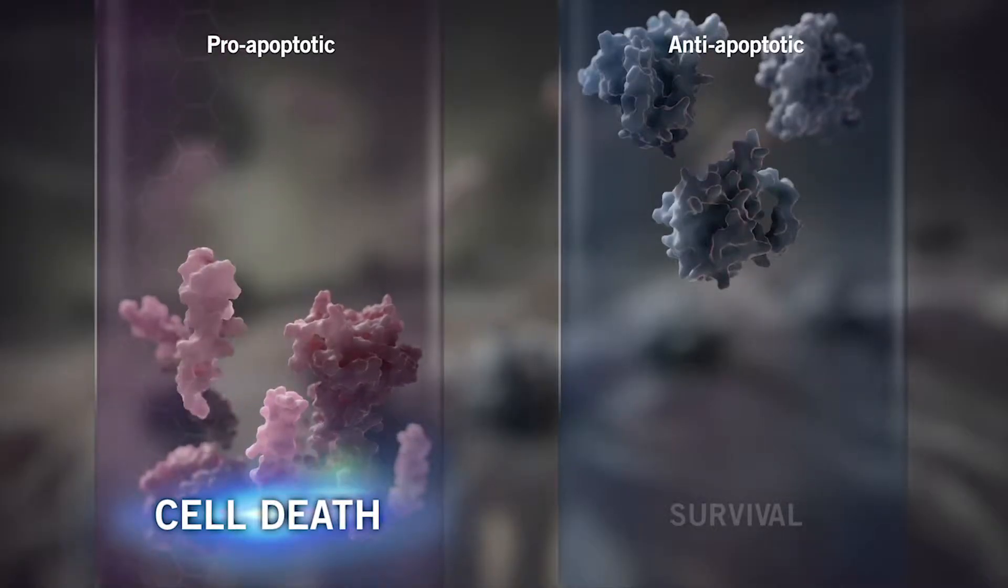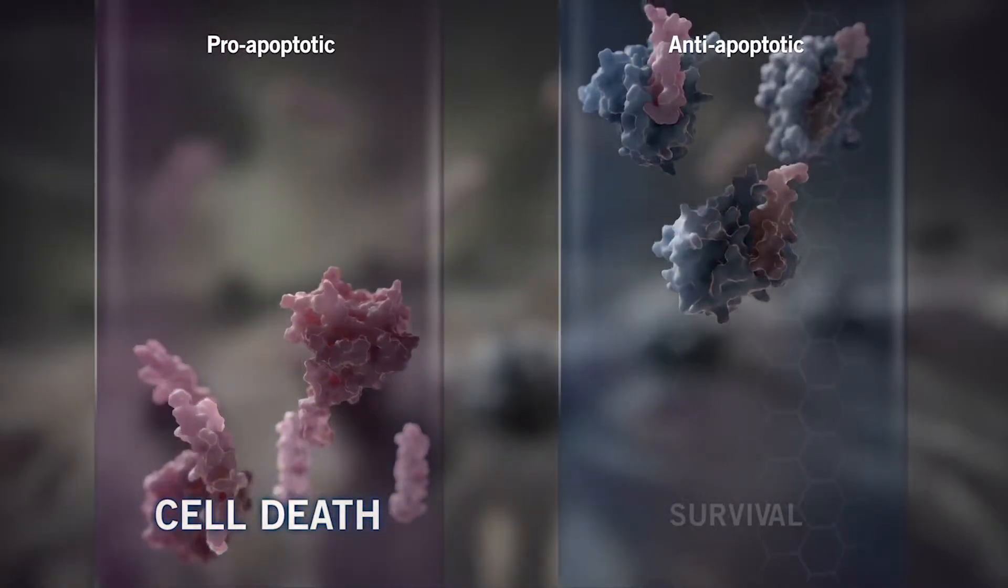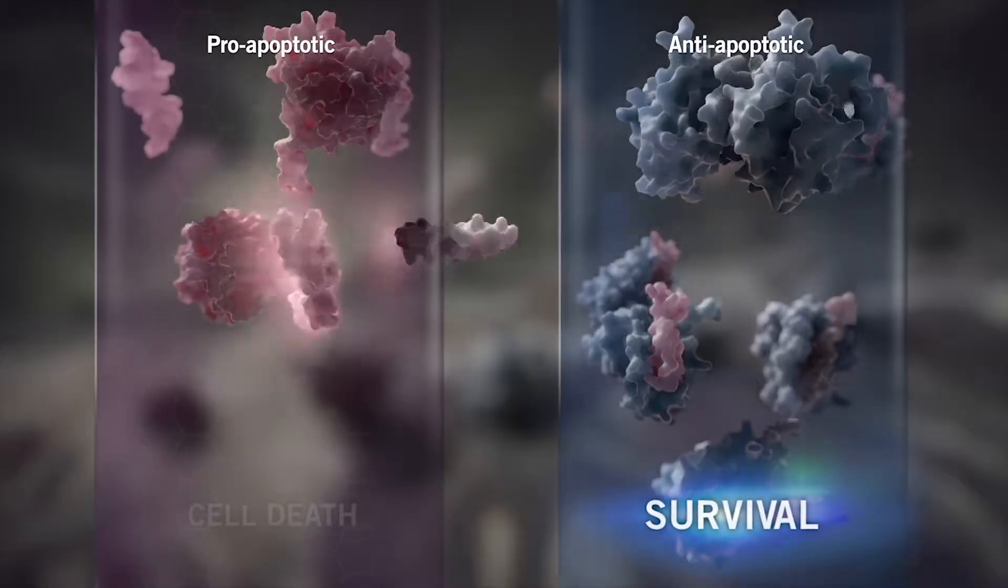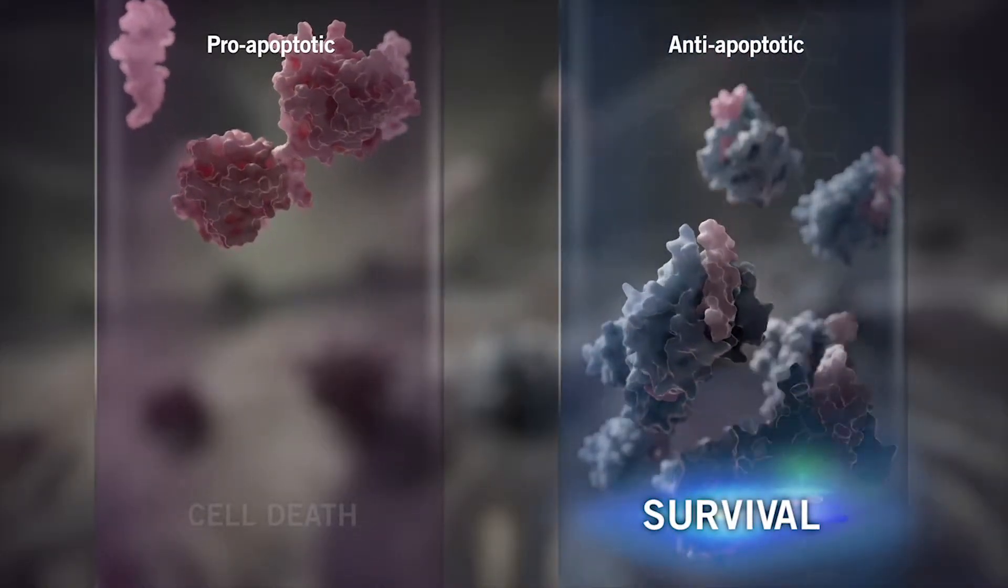By binding common structures shared among pro-apoptotic family members, BCL2 inhibits apoptosis.